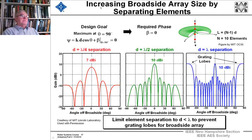Now let's see what happens when we increase the broadside array size by separating the elements. We start off with d at a quarter wavelength separation. We get a gain of 7 dB. When we go to a d of lambda over 2 separation, we get more gain.